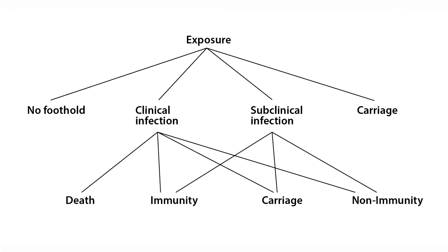Let's go back to the terminology we started talking about. If one is exposed to an infectious agent, a number of possibilities could occur: nothing, clinical infection, subclinical infection, or the person could carry the organism but not be sick. For clinical infection, death might occur, or immunity — that is, an individual recovering and becoming immune — or they might carry it, or remain non-immune. For subclinical infection, there wouldn't be death, but immunity, carriage, and non-immunity might also occur.